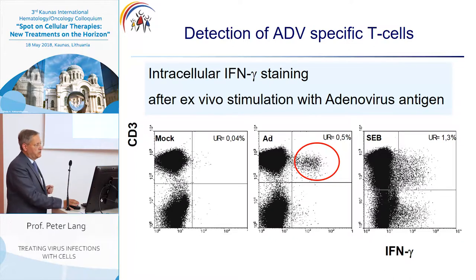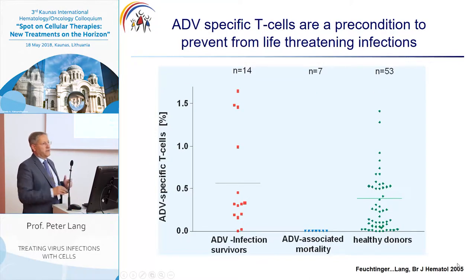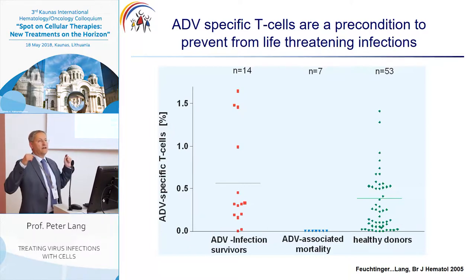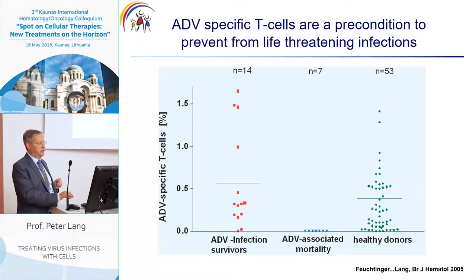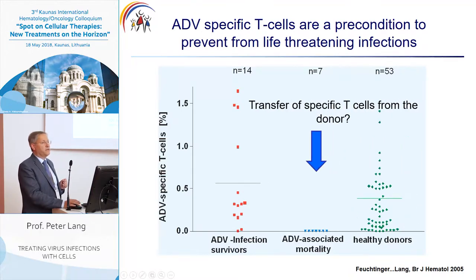Therefore, we established the detection of ADV-specific T cells with intracellular interferon gamma staining. Here you can see the negative control and the positive signal coming from positive T cells. This slide shows that ADV-specific T cells are indeed a precondition to prevent life-threatening infections. Patients who died from ADV had absolutely no specific T cells detectable, while patients who survived had a frequency of specific T cells comparable to that from healthy donors.